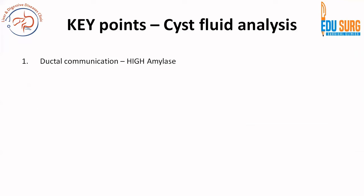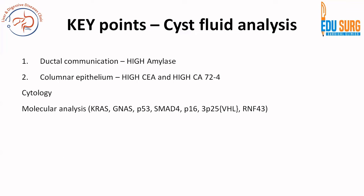Coming to cyst fluid analysis, what are the key points to remember when you are seeing a report or advising cyst fluid analysis? One important point is that we need to correlate all the tests - the clinical presentation, the imaging findings, and the cyst fluid analysis. Understand that if imaging shows ductal communication, the amylase is going to be high in the cyst fluid. If there is columnar epithelium, it will have high CEA and CA72-4. When it comes to cytology, you are going to see the lining or the cell of origin. The other thing you can do on cyst fluid is molecular analysis, which can be done by next generation sequencing, or you can do slides and immunohistochemistry.